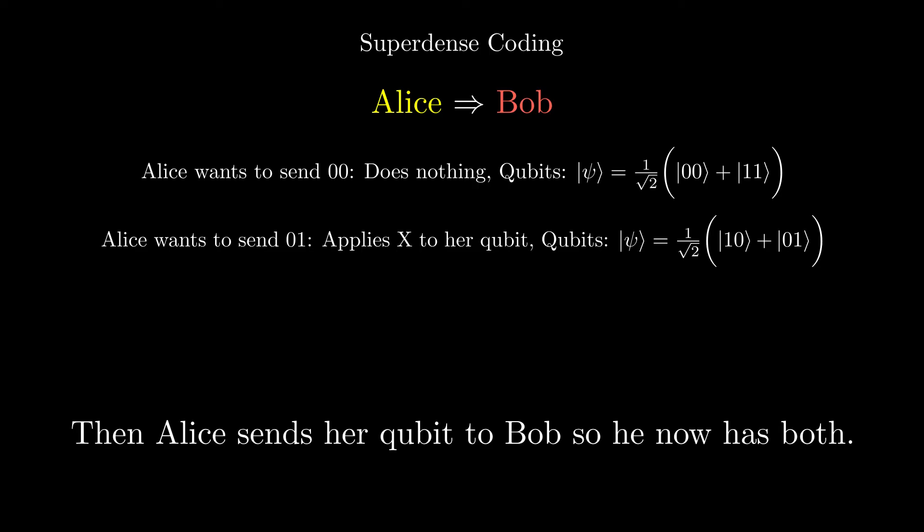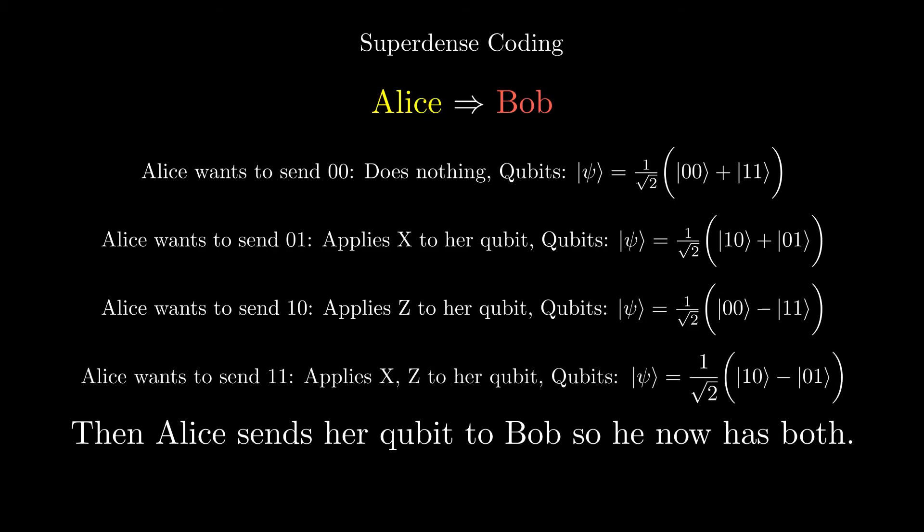If Alice wants to send 10, she applies a Z gate to her qubit, transforming the qubits to this state, then she sends it to Bob. Lastly, if she wants to send 11, she applies both an X and Z gate to her qubit, giving us this state. She then sends her qubit to Bob.